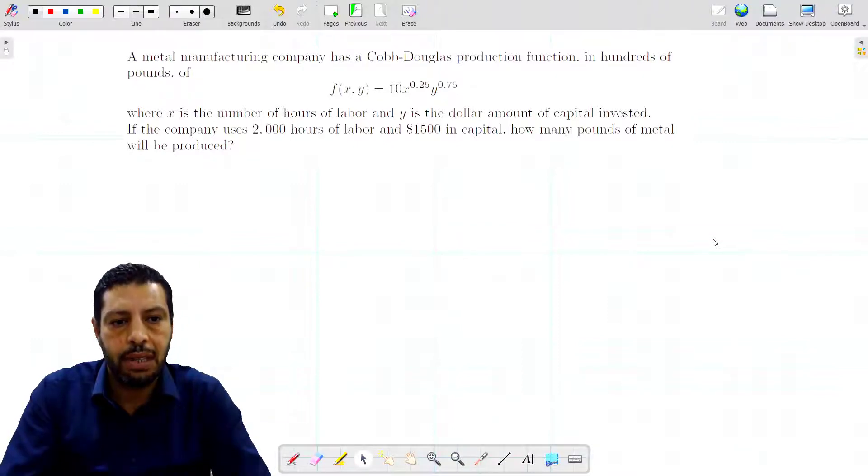Here the two variables represent the labor and the budget. If the company uses 2000 hours of labor and $4500 in capital, how many pounds of metal will be produced?